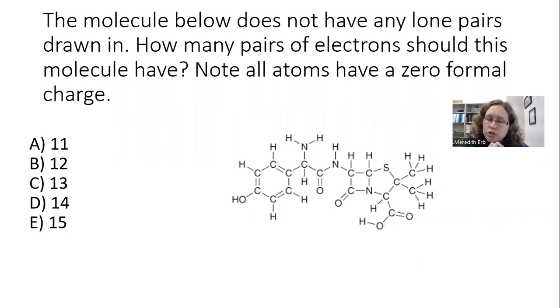We have to look at this Lewis structure and add the lone pairs in. Because we know that all the atoms have a zero formal charge, that's helpful. That means there aren't any extra electrons or too few electrons hiding in there.